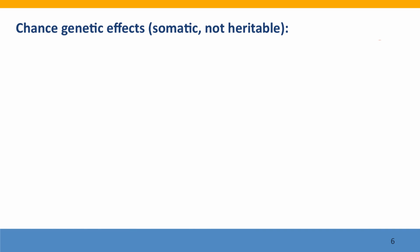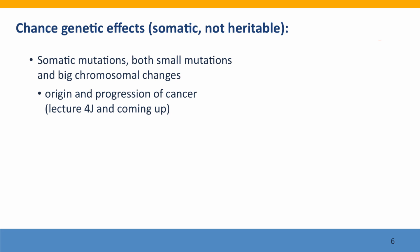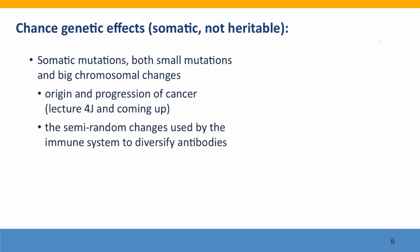We can think about chance and its consequences particularly in terms of somatic events — events that aren't heritable. Somatic mutations themselves are very much the product of chance; we can't predict which mutations will happen or when they will happen. These mutations play very important roles in the origin and progression of cancer, which we talked about in lecture 4j and will discuss more in the next few lectures. Chance also plays very important roles in the immune system, because the immune system uses mutational processes to generate the diversity of antibodies our body produces in response to infections or vaccinations, and which particular antibodies we happen to make will determine the quality of our immune response and how long it persists.